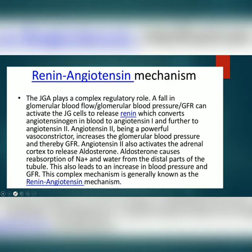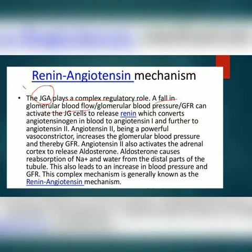Now we will see the renin-angiotensin mechanism. JGA, the juxtaglomerular apparatus, plays a complex regulatory role. A fall in the glomerular blood flow, blood pressure, or GFR activates the JG cells to release renin.